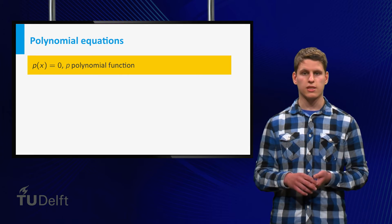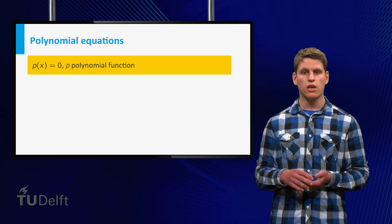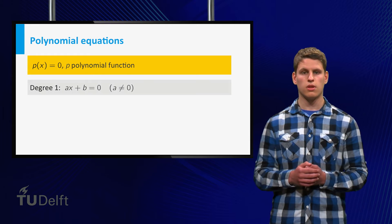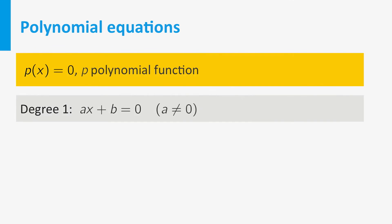The most important cases are those where p has degree 1 or 2. The degree 1 equation has the form a times x plus b equals zero, with a non-zero. The solution is simply x equals minus b divided by a.